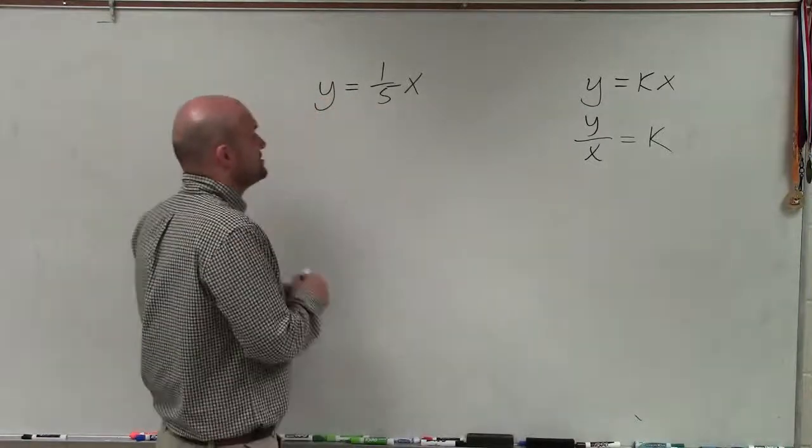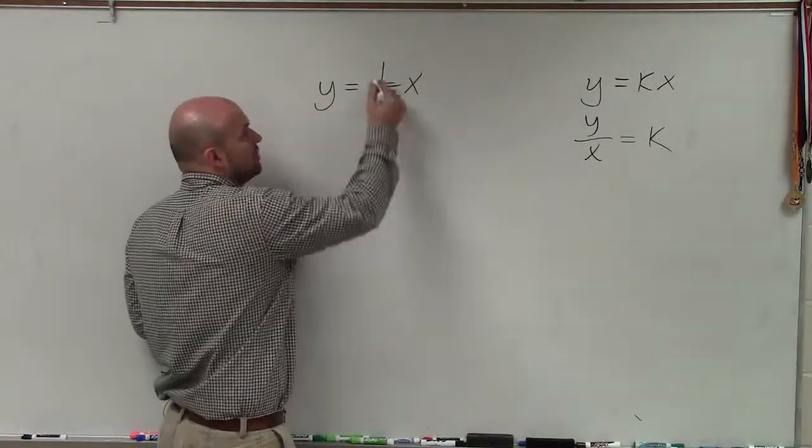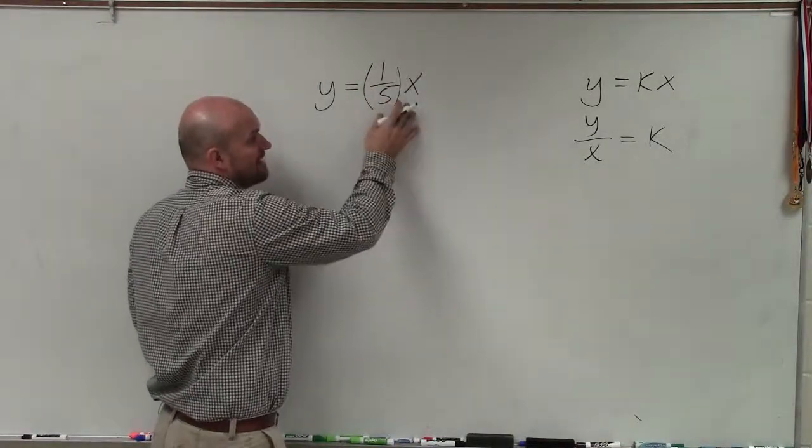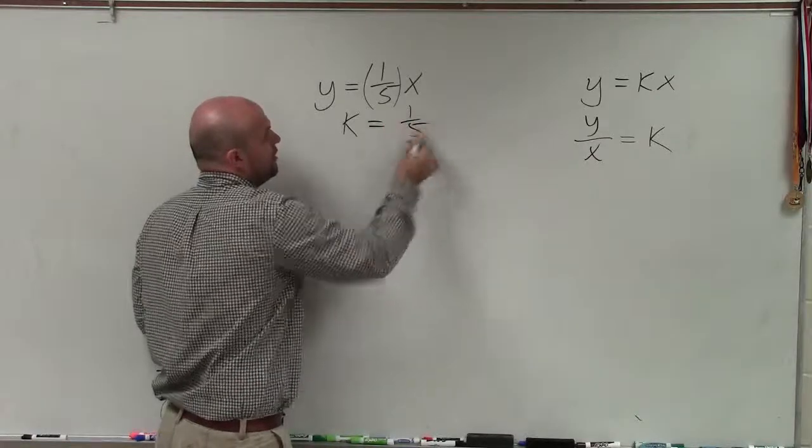Now, since I don't see any addition and subtraction, you can see that this is already in that format, where you could say that is 1 over 5 times x. So I could say that k is equal to 1 fifth.